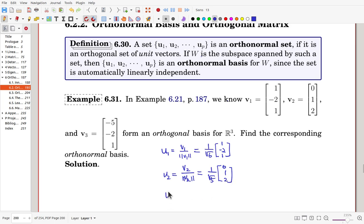And u3 from v3 divided by its norm. The norm of v3 is 25 plus 4 plus 1, so that is square root of 30. So 1 over square root of 30 times v3, which is [-5, -2, 1].